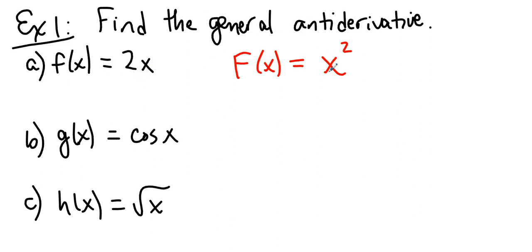But not just x squared, any vertical shift will do, plus a constant. What about cosine x? Well, we think about things whose derivatives are cosine x. There are lots of functions whose derivatives are cosine x, but the most basic one is sine x, and then that sine x can be moved up or down plus a constant.